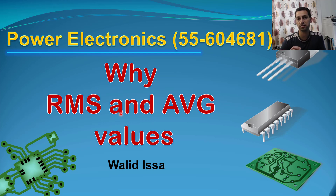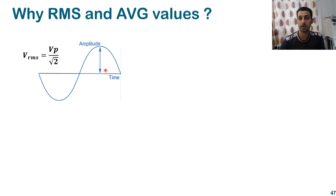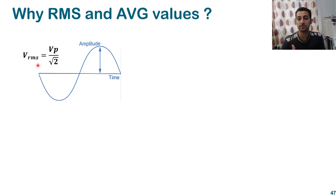The objective of this lecture is to highlight the importance of RMS and average values in power electronics, and in the coming video we will cover how we calculate these for various waveforms. If I ask you about a sinusoidal signal you know all its properties — frequency, amplitude — and you know the RMS is Vp divided by the square root of two. In power electronics, however, we don't always have sinusoidal inputs or outputs; for example, DC-to-DC converters have no sinusoidals.